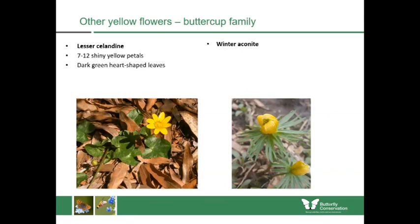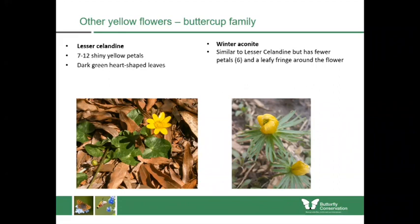Still in the buttercup family is the winter aconite, which isn't native to the UK but has been naturalised over many centuries. It's similar to lesser celandine but has only six petals and has a distinctive leafy fringe going around the top of the flower, which lesser celandine doesn't have. They flower around the same time.